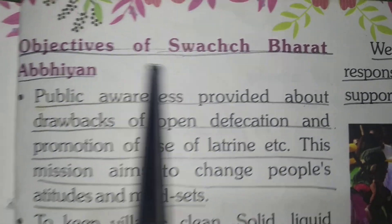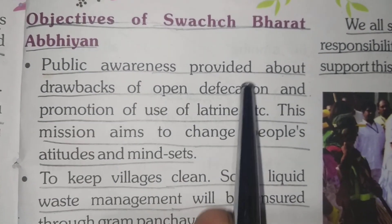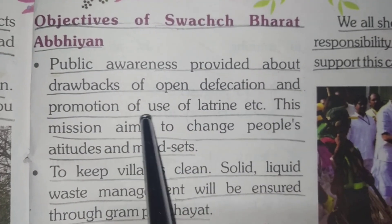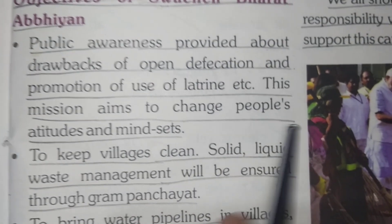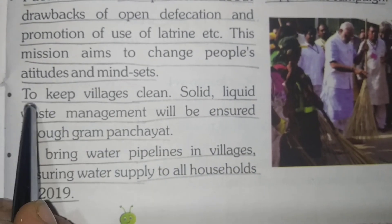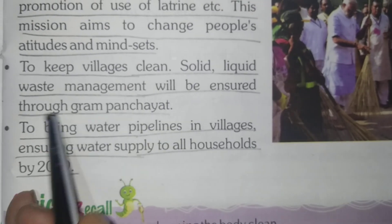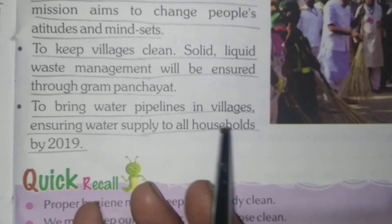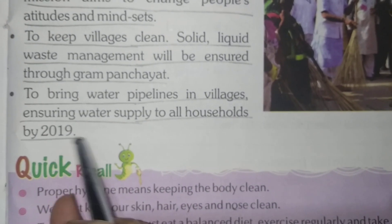Objectives of Swachh Bharat Abhiyan: Number 1 — public awareness about the drawbacks of open defecation and promotion of the use of latrines. This mission aims to change people's attitudes and mindsets. To keep villages clean, liquid waste management will be ensured through Gram Panchayat. To bring water pipelines in villages, ensuring water supply to all households by 2019.